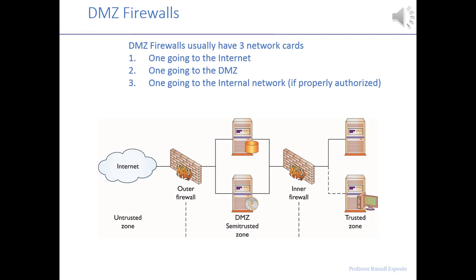Here's another picture of the demilitarized zone. The wild wild west — the untrusted internet — is on the left-hand side. There's an outer firewall protecting the DMZ, that square box in the middle, and then an inner firewall protecting the trusted zone — the corporate financials, human resource information, sales information, and customer information. You could also have a restricted trusted zone to the right of the trusted zone, with fewer employees having access, and another set of firewalls.